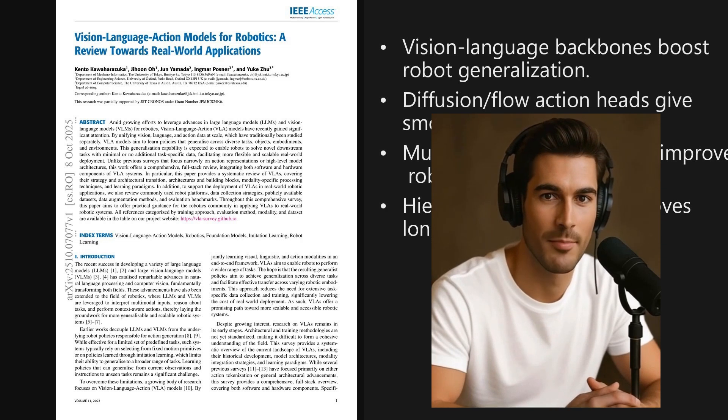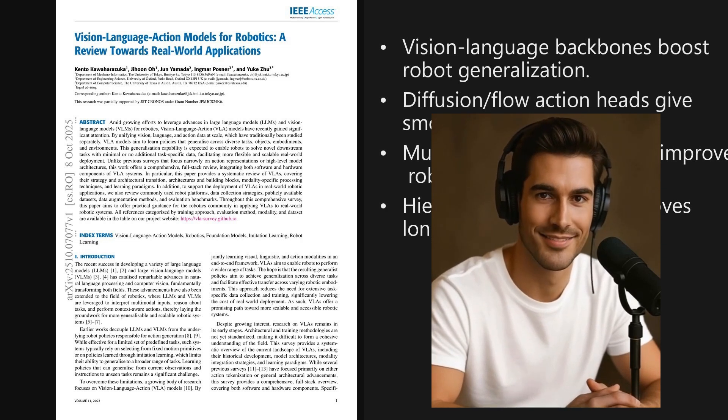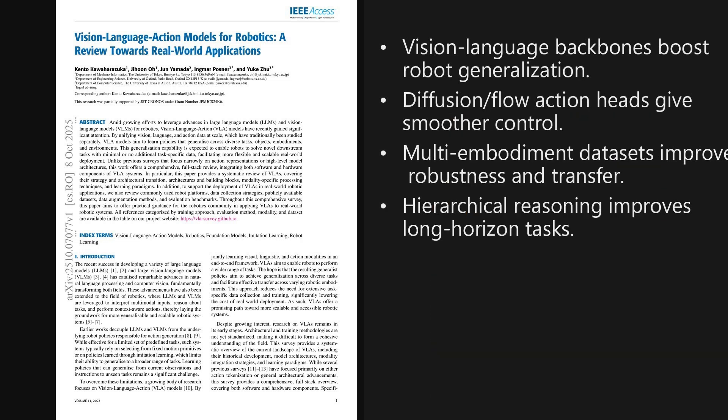Welcome to the AI Research Roundup. I'm Alex. Today, we're looking at a paper from the Hugging Face Trending List, published on October 8th, 2025, just yesterday. The big contribution is a full-stack survey that unifies how vision, language, and robot actions come together to produce generalist control policies that can transfer across tasks and hardware.